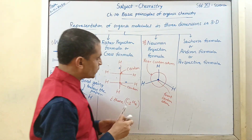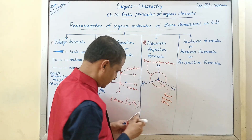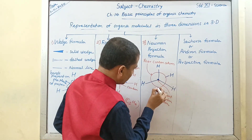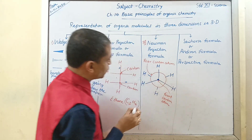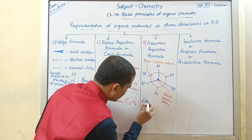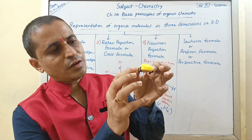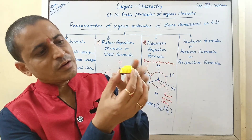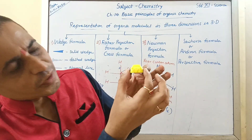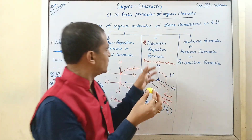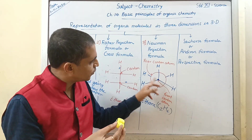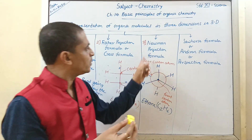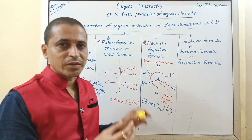Just like a car has front wheels and rear wheels — we cannot see the rear wheels of the car, we can only see the front wheels. Therefore in this representation you can visualize only the front carbon atom; you cannot visualize the rear carbon atom. And the unique feature of this representation is that we cannot see the carbon-carbon single bond.